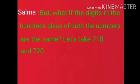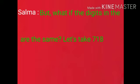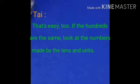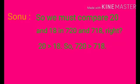But what if the digits in the hundreds place of both numbers are the same? Let's take 718 and 720. Selma, that's easy too. If the hundreds are the same, look at the numbers made by the tens and units. So we must compare 20 and 18 in 720 and 718. Right, 20 is greater than 18, so 720 is greater than 718.